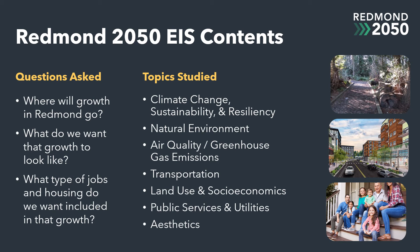An EIS can answer critical questions for a community, such as: What are the impacts of those decisions? How can we avoid or limit negative impacts? And what are the positive impacts that allow us to achieve community goals, including sustainability, affordable housing, and more? These are the questions asked and answered in the Redmond 2050 EIS.